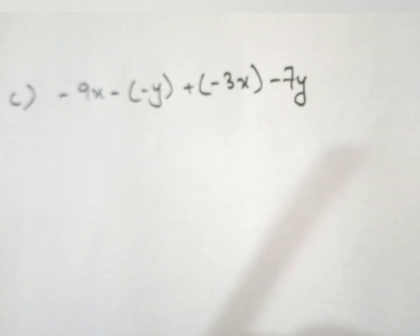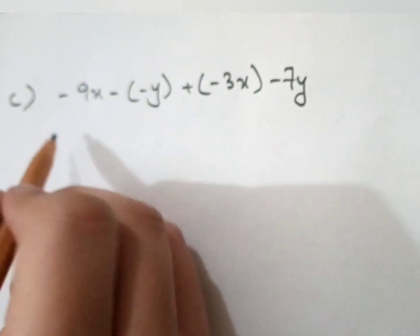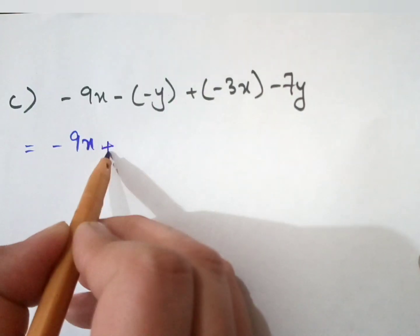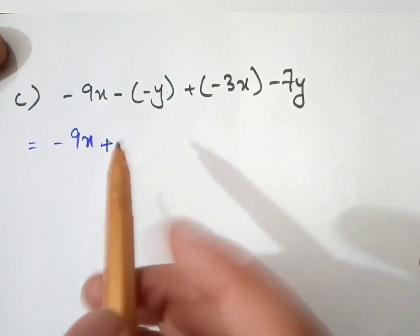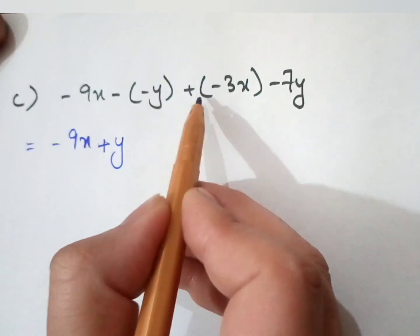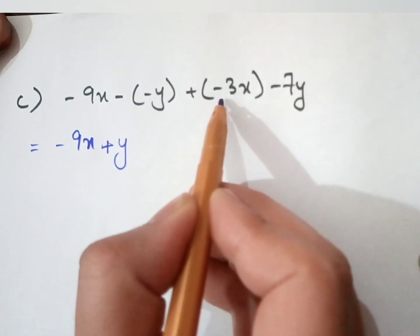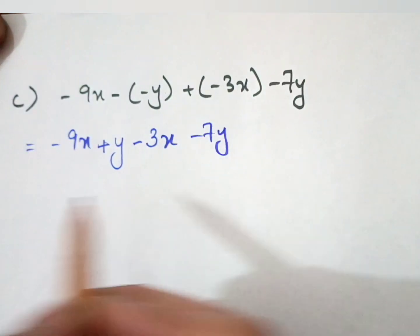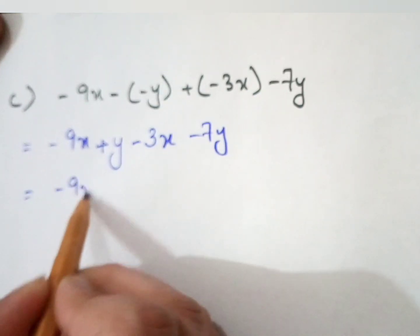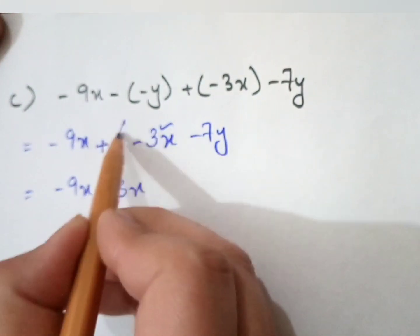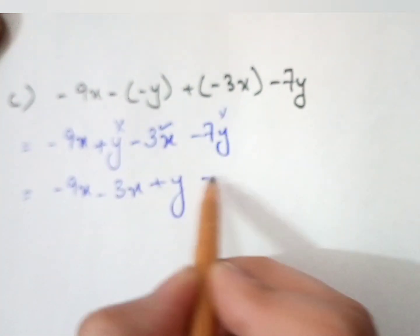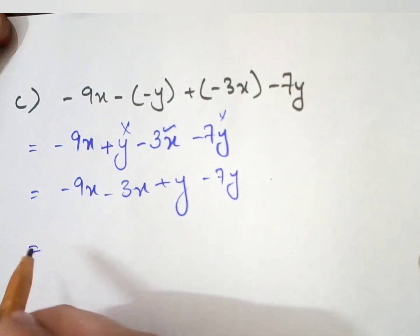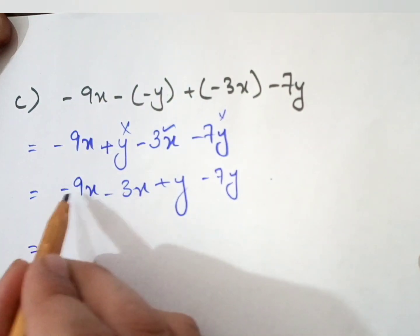In Part C, firstly we solve the bracket terms. There is a minus sign outside the first bracket so the inner signs will change: minus 9x becomes plus 9x. For the second bracket, there is a plus sign outside, so the inner signs remain the same: then minus 5. Now rearrange the terms with the x variable: 9x minus 3x, and the y terms: plus y minus 7y.